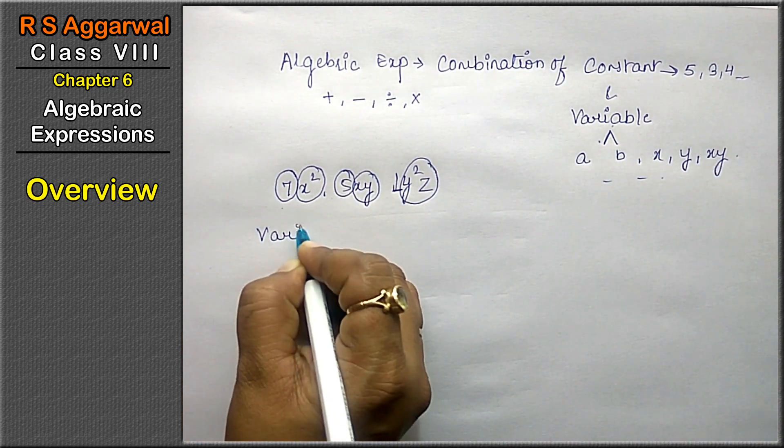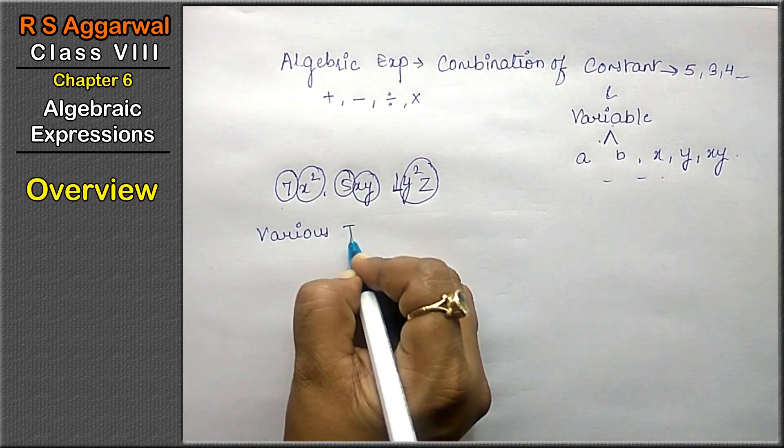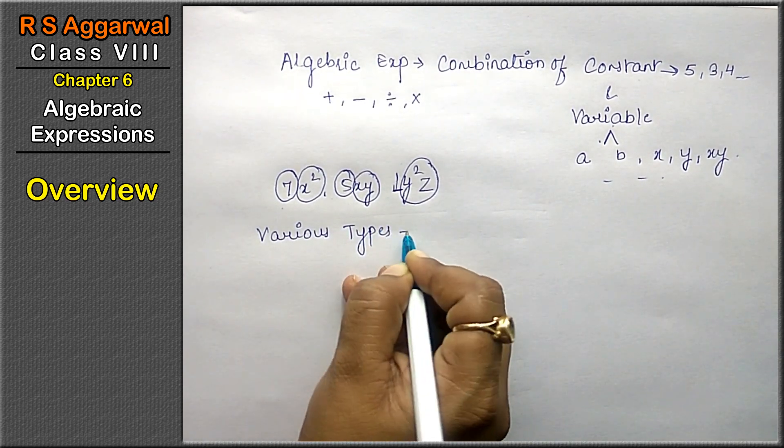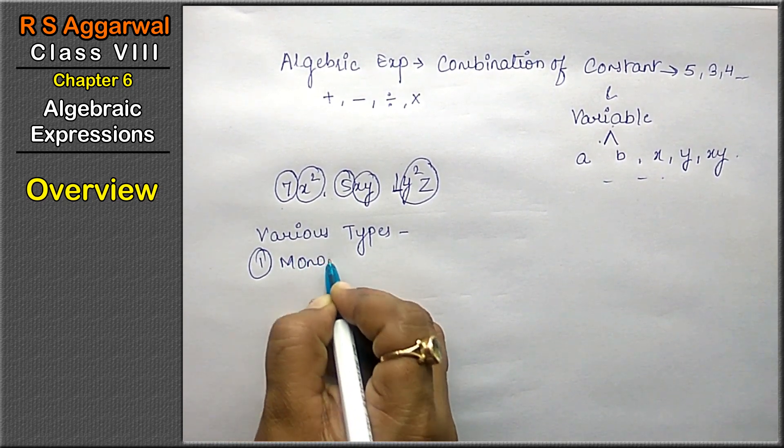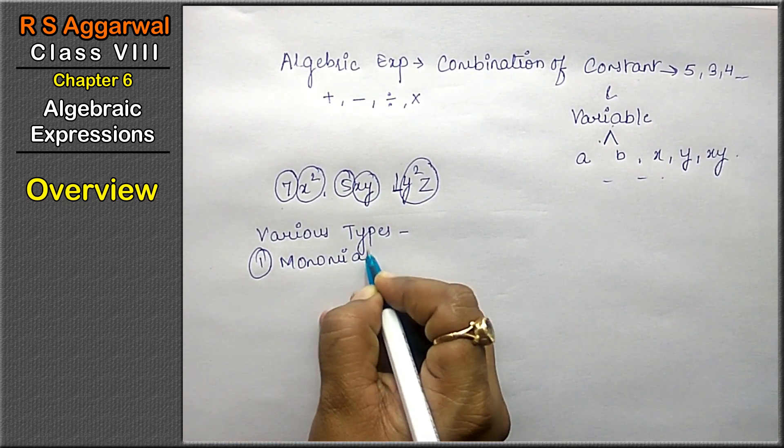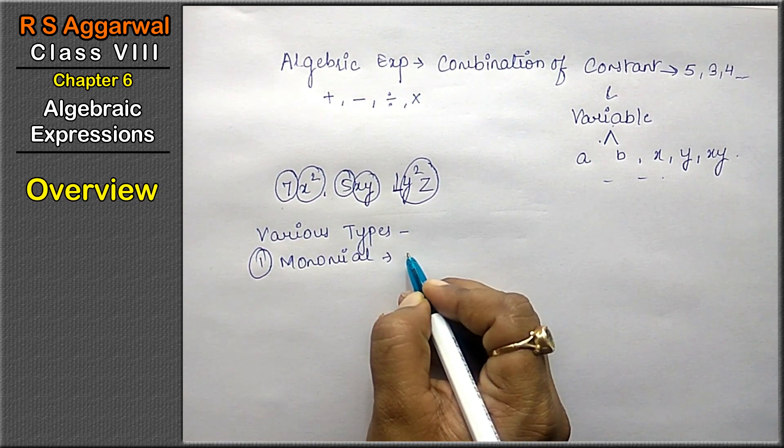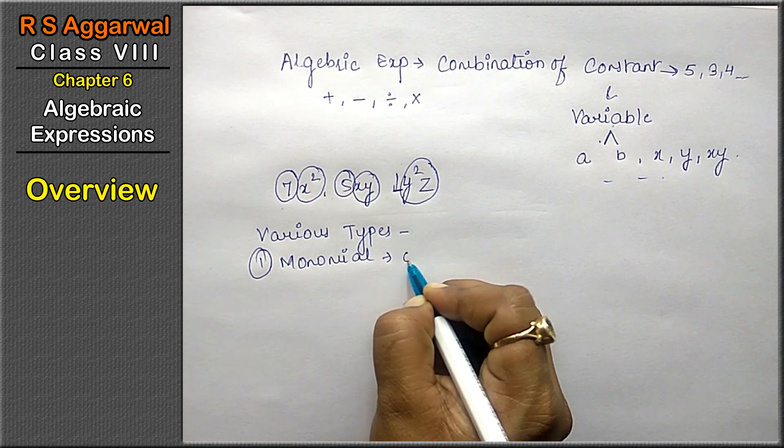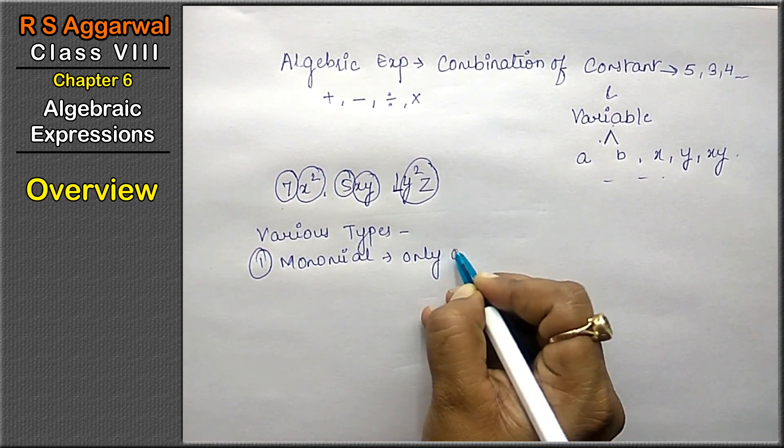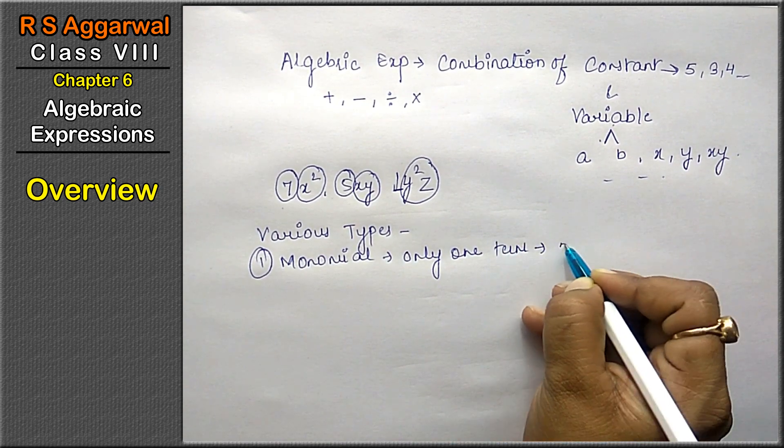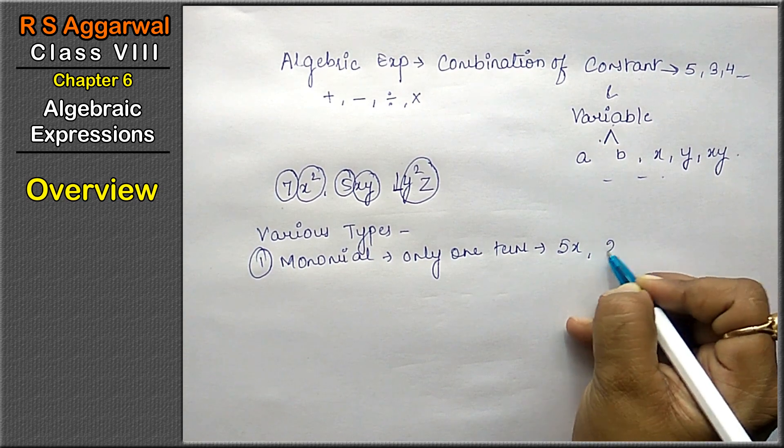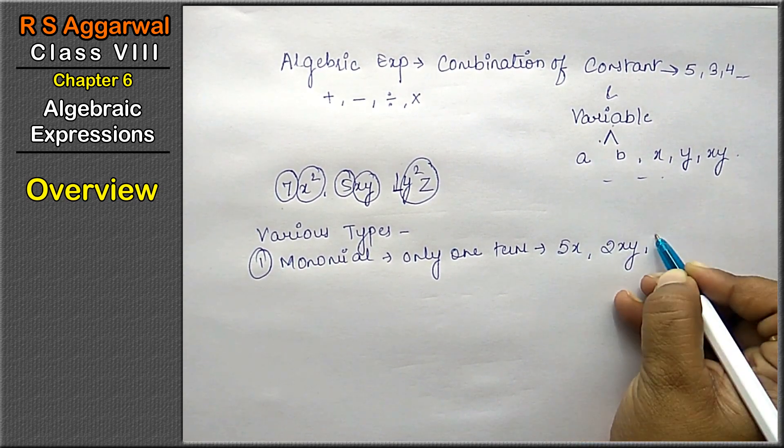Various types of algebraic expressions are, number first, monomial. Monomial are expressions with only one term. For example, like 5x, 2xy, 7z.